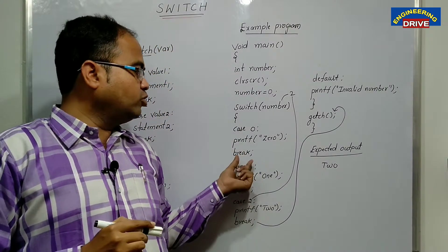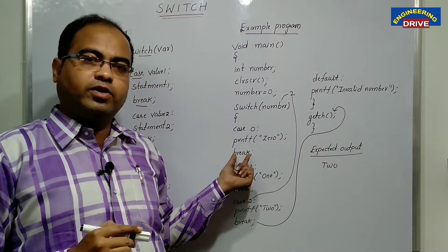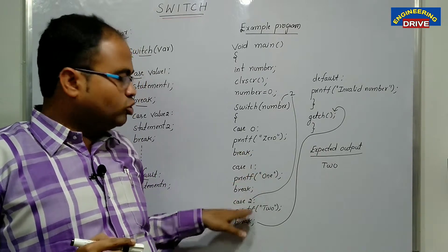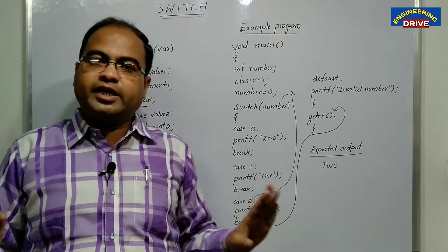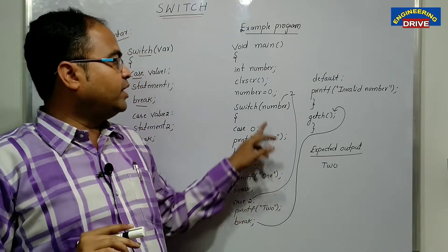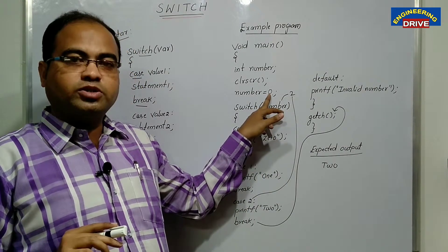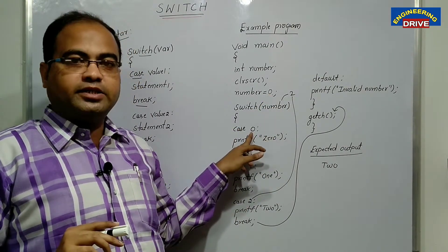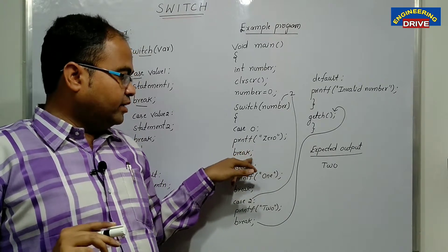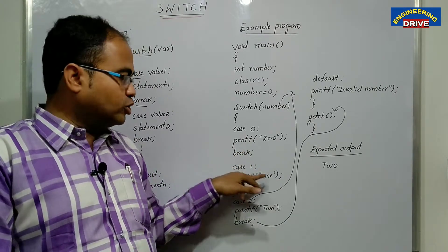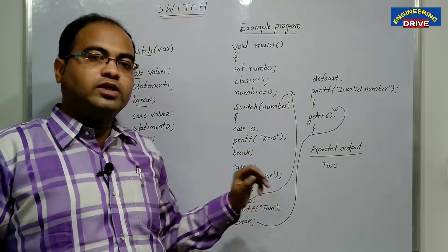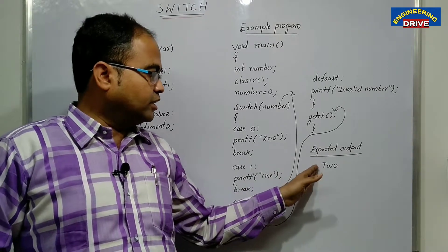And the important thing is you need to understand the use of break keyword here. Let us say if I don't use break keywords, you will not get any error in the program. Then what happened? Let us say number is equal to zero. You are given case zero matches zero will display. Then it will go to case one. Also one will display it will go to case two will display. So we'll get answer zero one two.